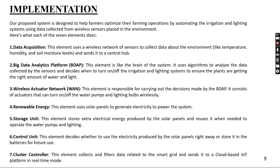Second, the Big Data Analytics Platform (BDAP): this element is like the brain of the system. It uses algorithms to analyze the data collected by the sensors and decides when to turn on or off the irrigation and lighting systems to ensure the plants are getting the right amount of water and light. Third, the Wireless Actuator Network (WAN): this element is responsible for carrying out the decisions made by the BDAP. It consists of actuators that can turn on or off the water pumps and light bulbs wirelessly.